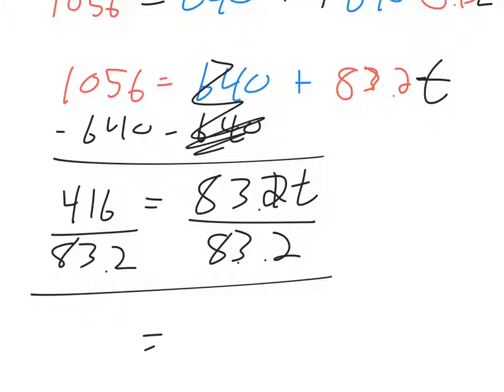So what you're left with is 5 on the left and T on the right. So T equals 5 years.